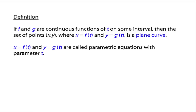So the definition: if f and g are continuous functions of t on some interval, then the set of ordered pairs — the set of points (x, y) where x is some function of t and y is some function of t — is called a plane curve. Plane meaning just in the two-dimensional plane. The equations x equals f of t and y equals g of t are called parametric equations, and t is called the parameter.